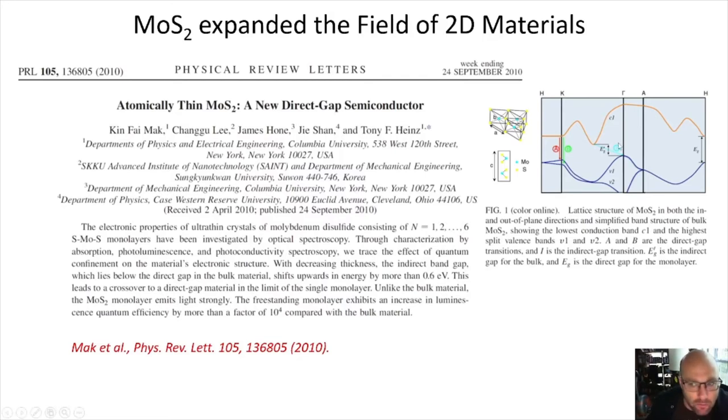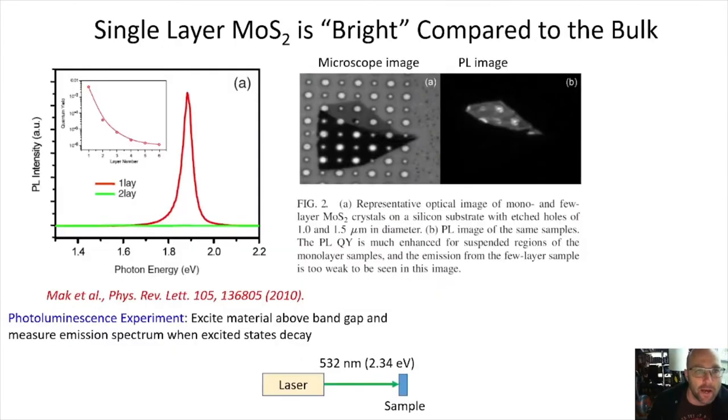This is the band structure of MoS₂. As we know in the hydrogenic model, eventually we're going to need band structure to get reduced mass. We'll be talking about that in just a second.